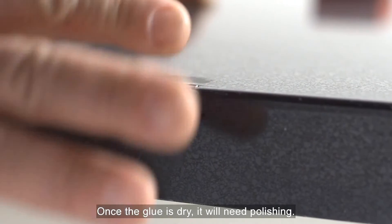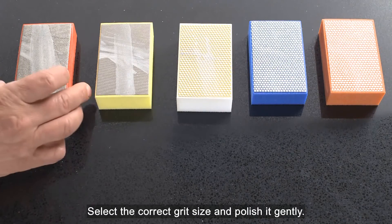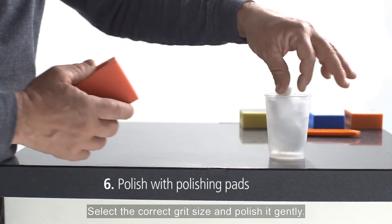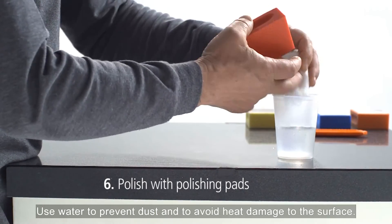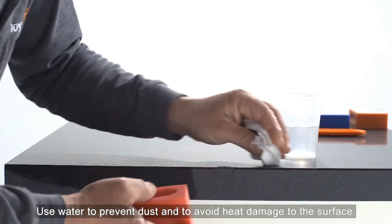Once the glue is dry, it will need polishing. Select the correct grit size and polish it gently. Use water to prevent dust and to avoid heat damage to the surface.